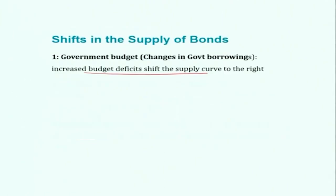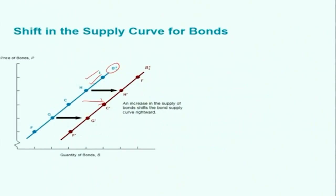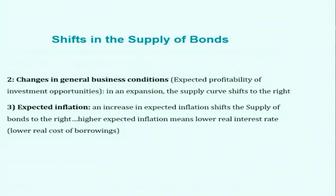As a result, we can see that the supply curve will be shifting rightwards — the government is borrowing more irrespective of bond price, as other factors are driving it. If the government's fiscal deficit condition is better, then the curve will be shifting leftwards, as the government does not need to borrow as much.